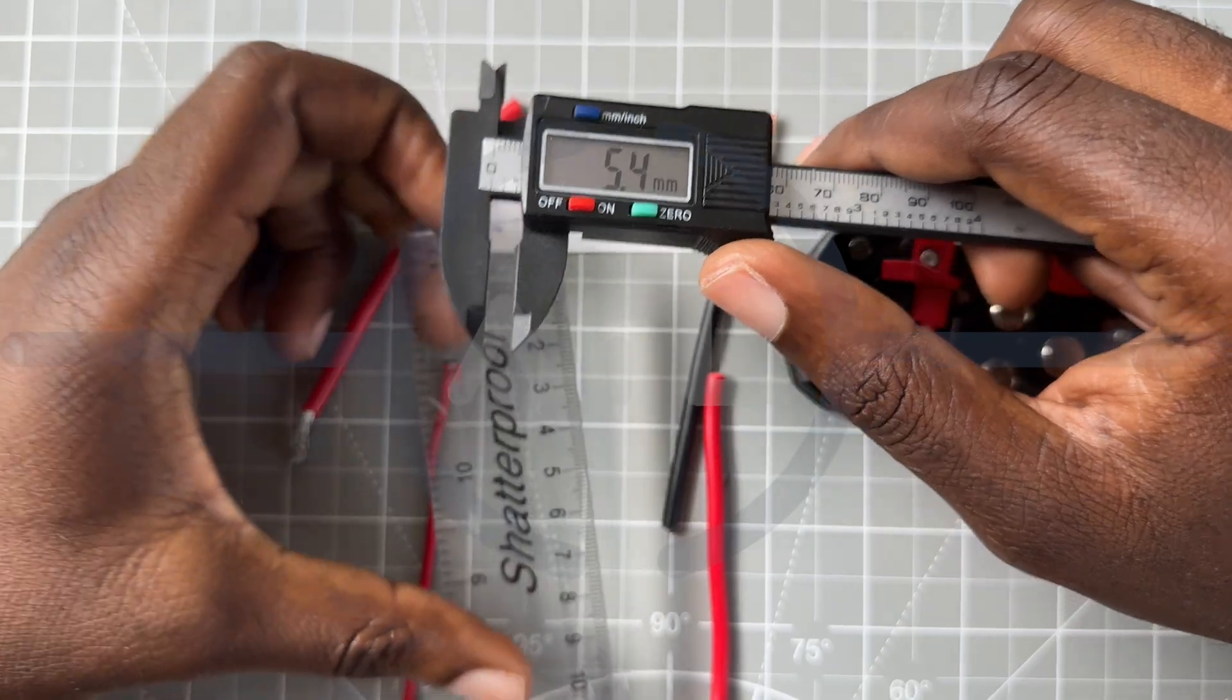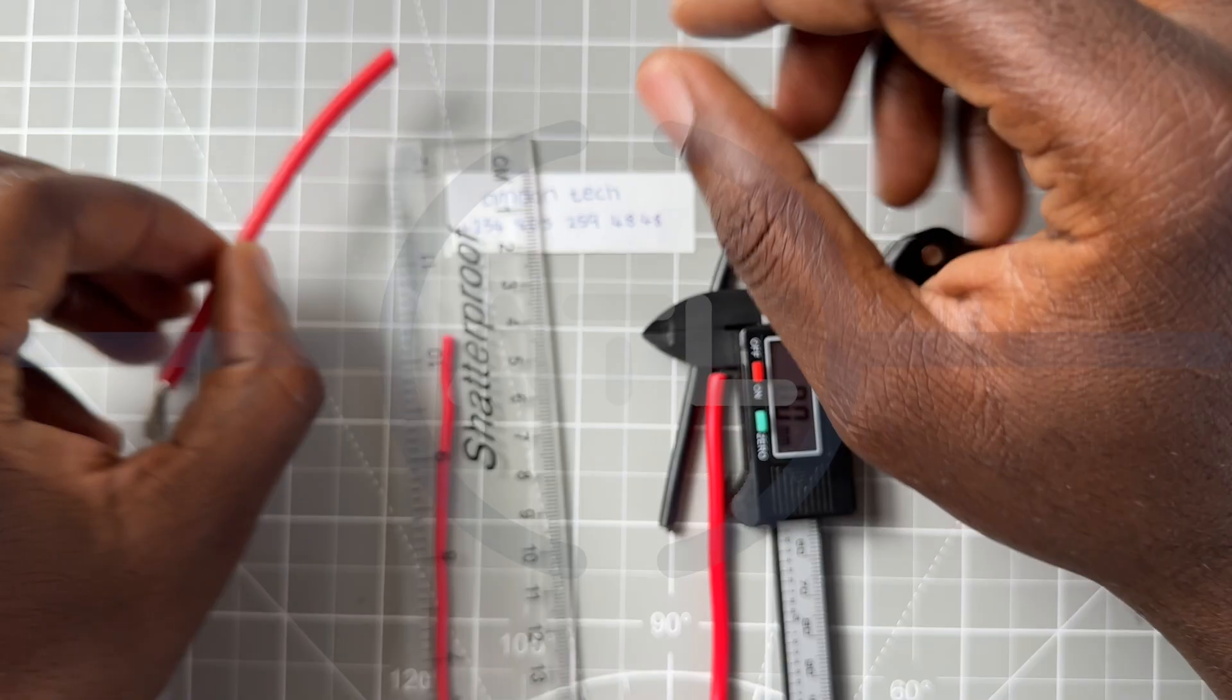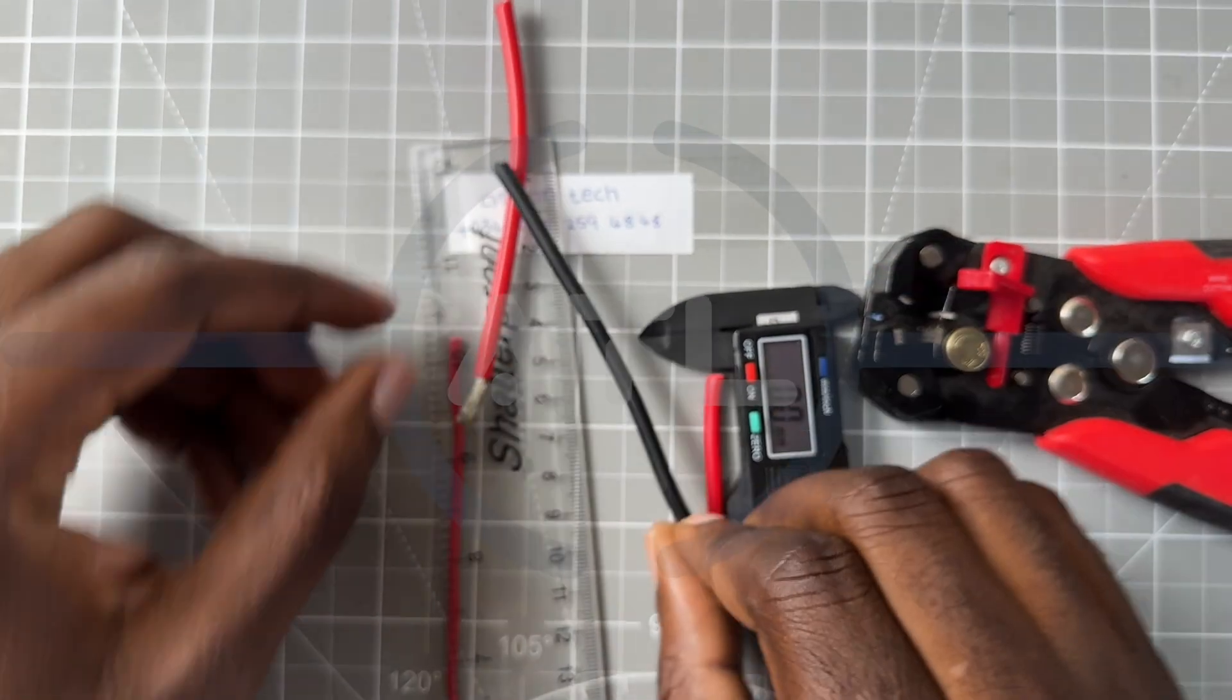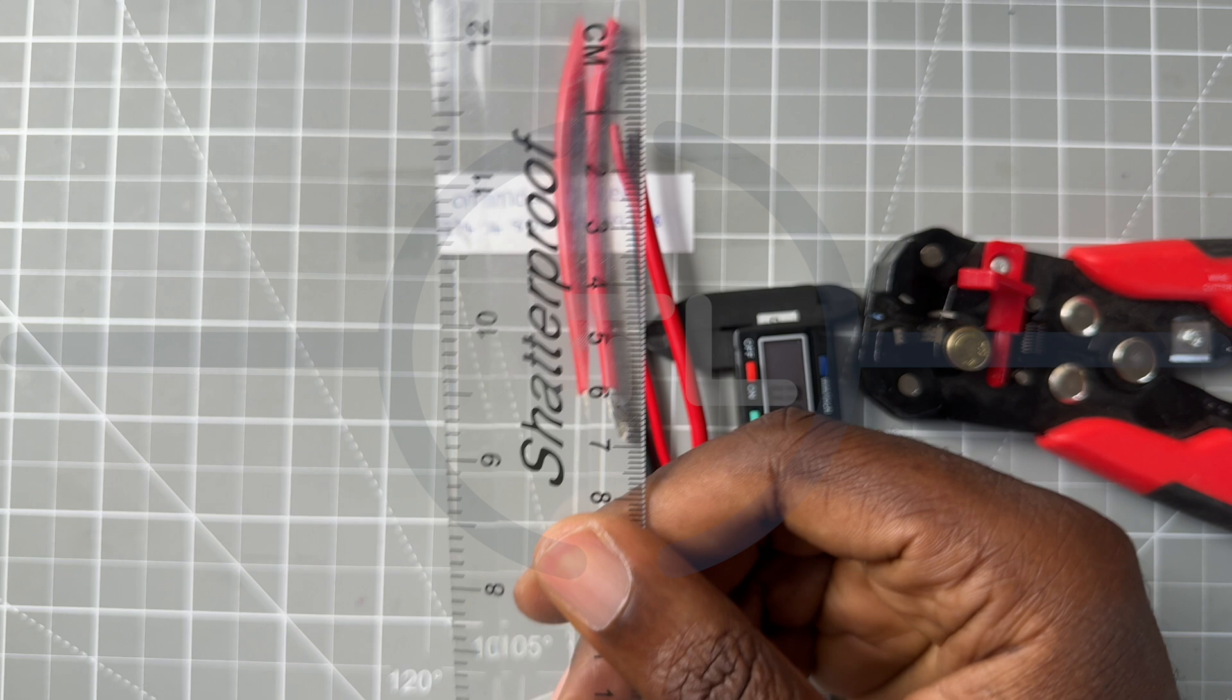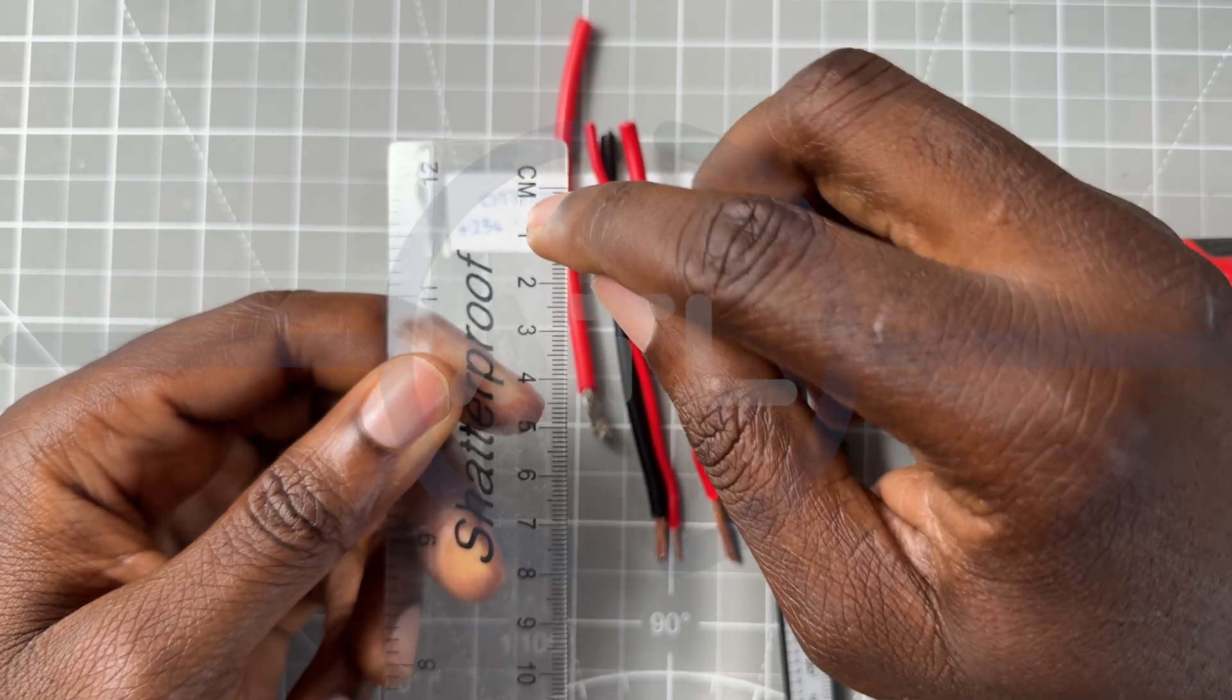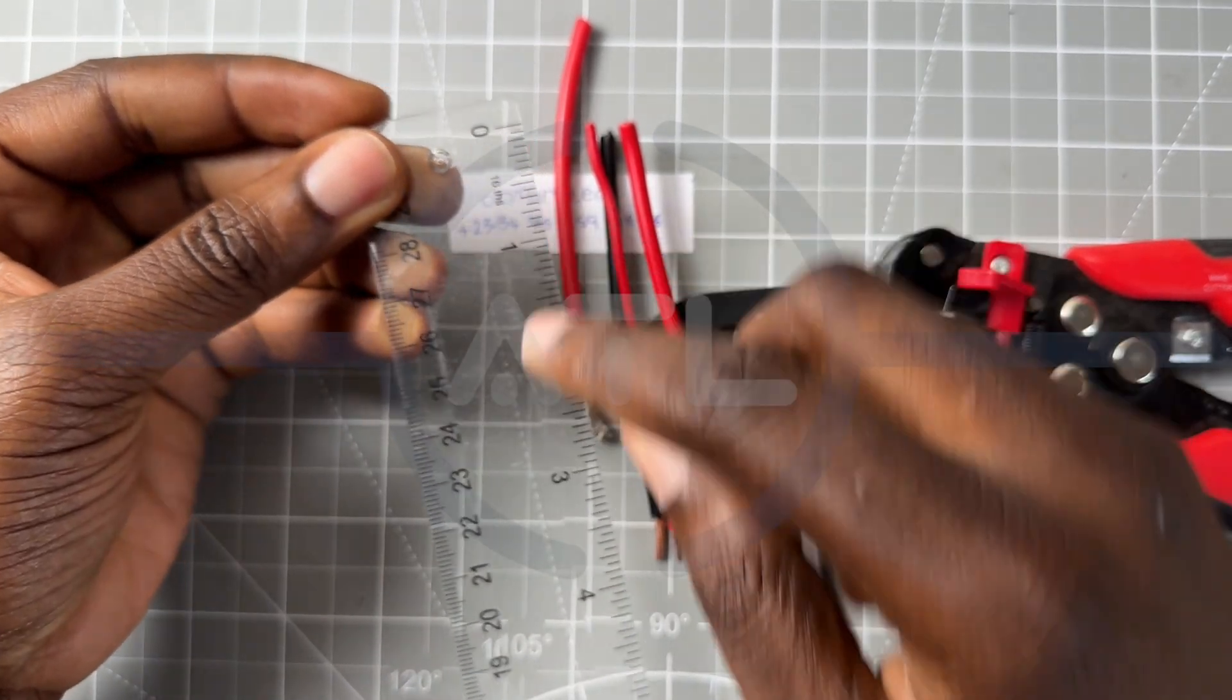To begin, we will need wire, so we have different types of wire here just for testing. Next we'll need a ruler that has the centimeters or the millimeter mark. So that's what you have here, the other end is inches, we don't need this. What we need is the centimeters mark.